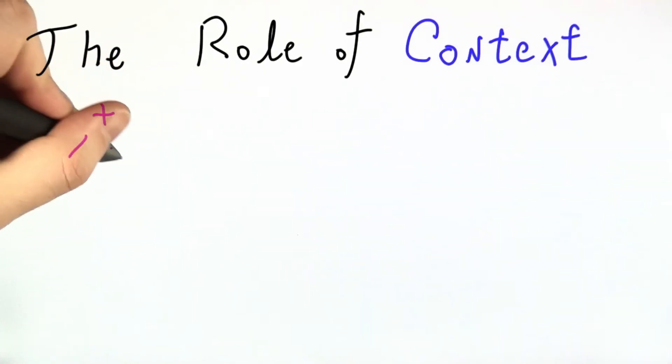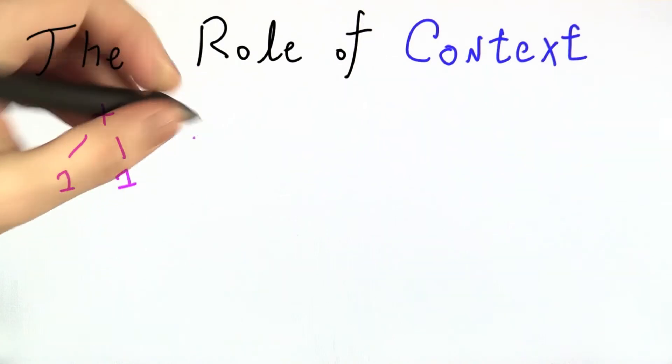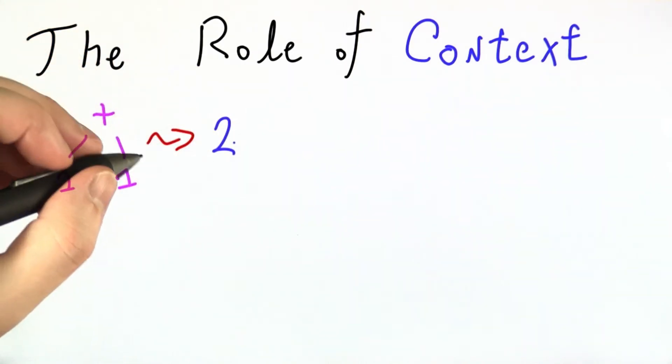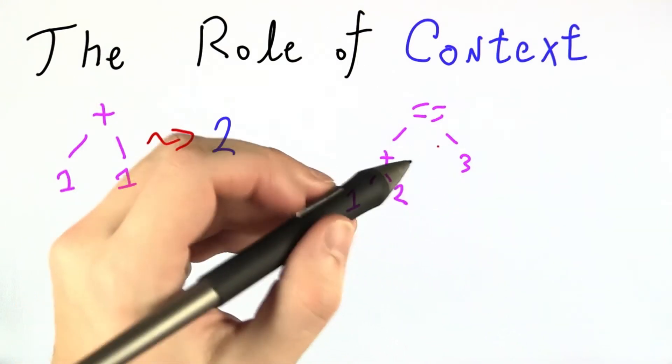We just saw how to evaluate arithmetic expressions like 1 plus 1 evaluates to 2. But we can also consider more complicated expressions like 1 plus 2 is equal to 3.